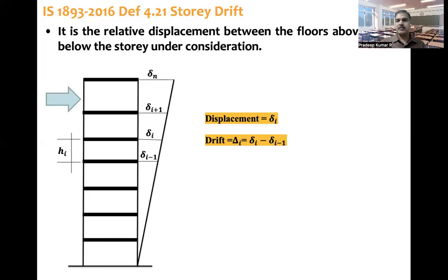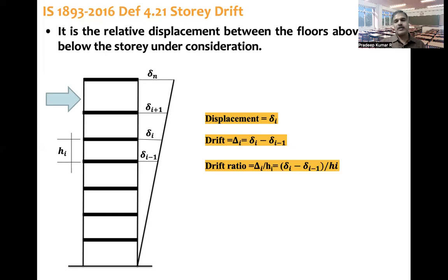Drift — note the symbol capital delta — so delta-i (i-th floor drift) equals small delta-i minus small delta-(i-1). Drift means the displacement of the floor under consideration minus the displacement of the floor below it. Drift ratio means drift divided by the height of that floor: (delta-i minus delta-(i-1)) divided by H-i. These are the key terms and definitions.